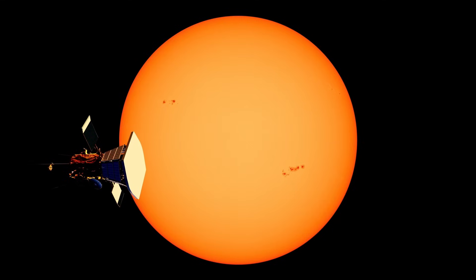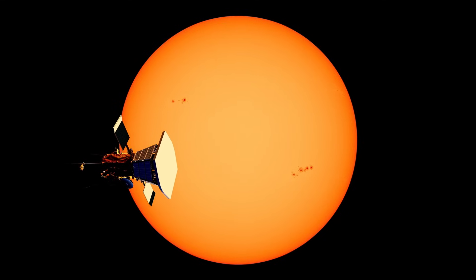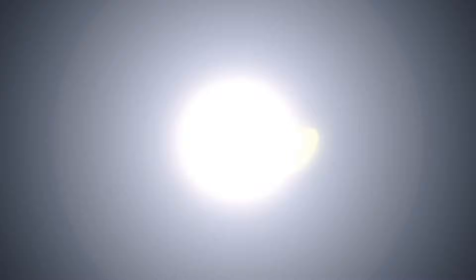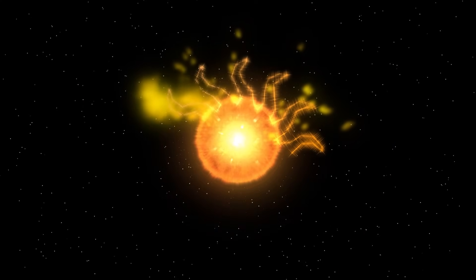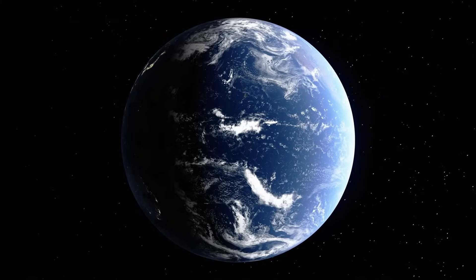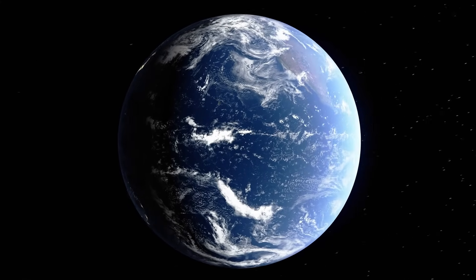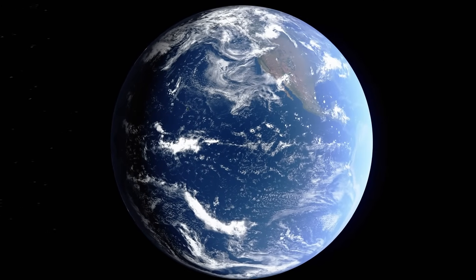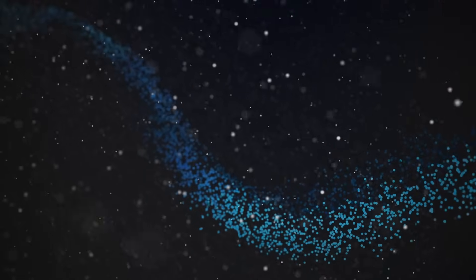Betelgeuse has always captured attention, not only due to its striking red glow, but because of its sheer size and behavior. Tucked into the shoulder of Orion, this giant star is nearing the end of its life. It's about 764 times the size of our Sun.